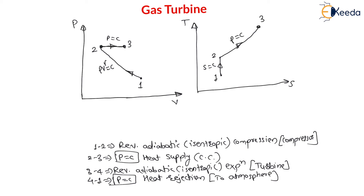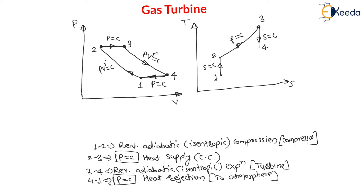Process 3 to 4 is reversible adiabatic expansion in the turbine: volume increases and pressure decreases following pv raised to gamma equals constant. On the TS diagram, entropy remains constant and temperature decreases. The final process, 4 to 1, is constant pressure heat rejection to the atmosphere: on the TS diagram, both temperature and entropy decrease back to point 1.